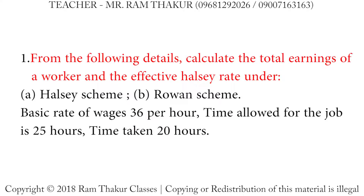From the following details, calculate the total earning of a worker and the effective hourly rate under Halsey Scheme and Rowan Scheme. Basic rate of wages: 36 rupees per hour. Time allowed for the job: 25 hours. Time taken: 20 hours.